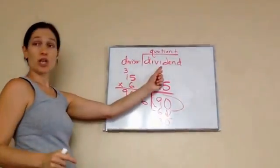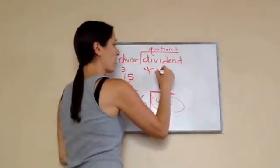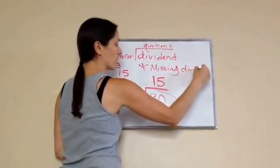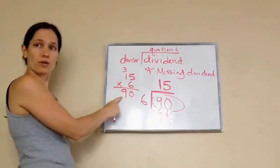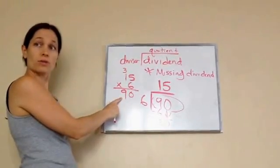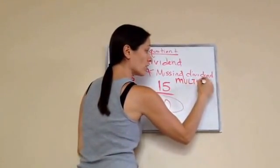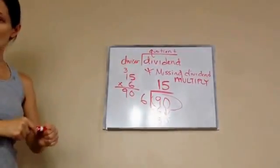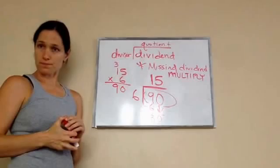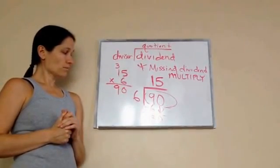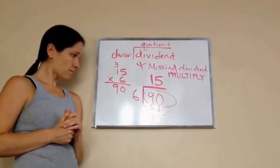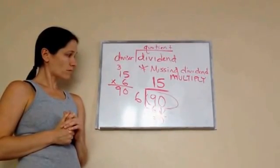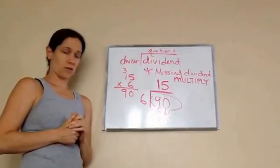Now, so what you need to know is that this is a rule. When you have a missing dividend, what will you do to get the answer? You multiply. You multiply. So, if you want to write down that rule, I would. I would write down that rule if I were you. But, remember, if you don't remember the rule, you can use the common sense method.